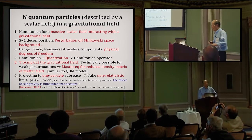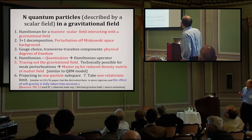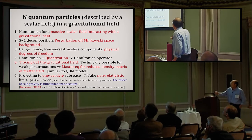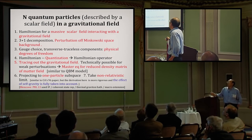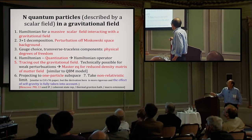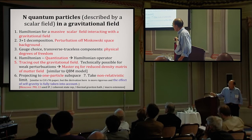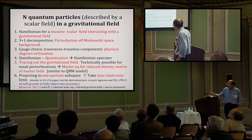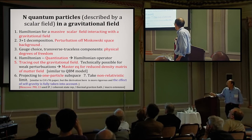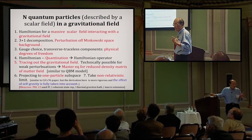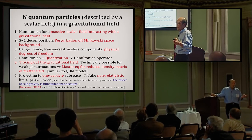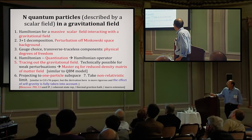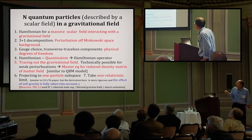All right, let's get going. First, we have a Hamiltonian for a massive scalar field interacting with gravitational field. We do a three plus one canonical decomposition and do a perturbation of weak field off Minkowski's space background. We make the gauge choice. The transverse traceless components are the physical degrees of freedom. These are all known for students in general relativity. And then we take the Hamiltonian and quantize it into a Hamiltonian operator. Then we trace out the gravitational field. In here, we need a little bit of quantum open system.